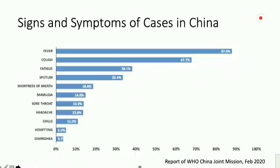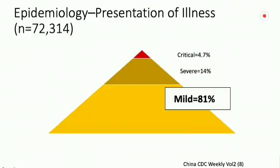Looking at the signs and symptoms: most symptoms associated with this illness are respiratory. Fever was the predominant symptom reported in patients suffering from COVID in China — more than 85% of cases reported high fever — followed by dry cough, fatigue, sputum production, and shortness of breath. In contrast, abdominal symptoms like diarrhea and vomiting were reported in less than 5% of cases. Most cases are mild — 81% of cases in China were mild. Only less than 5% were critical, requiring hospitalization and ventilatory support.